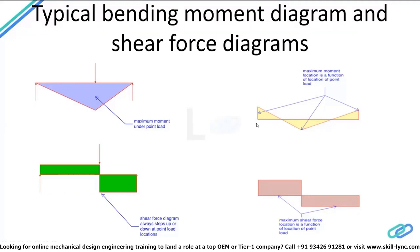Now if you consider a fixed-fixed beam where both supports are fixed, this is the kind of bending moment diagram we typically have. With a point load acting, for a fixed-fixed condition, we can't always guarantee that the maximum moment is developed at the load location, because there will be a negative moment at the supports. The magnitude of the negative moment could actually be more than the positive moment magnitude.